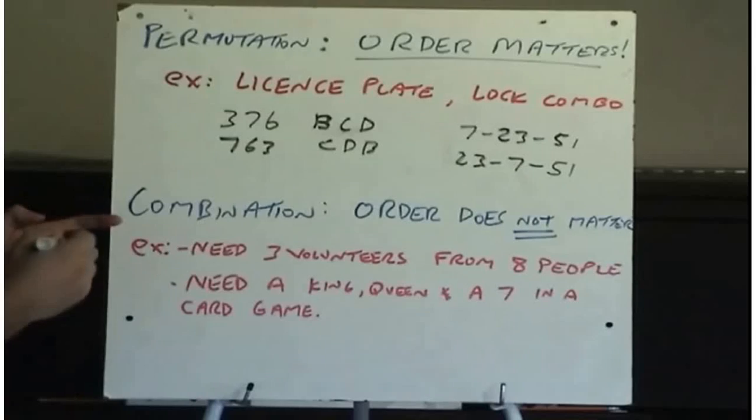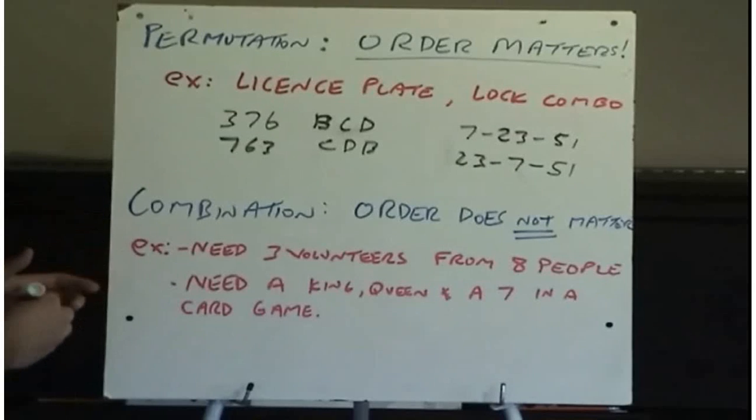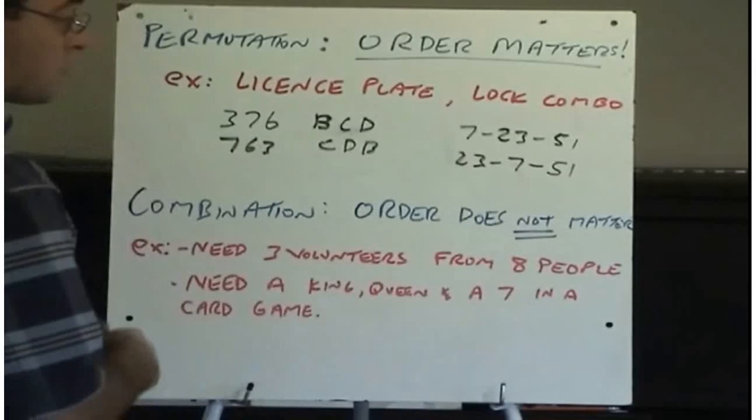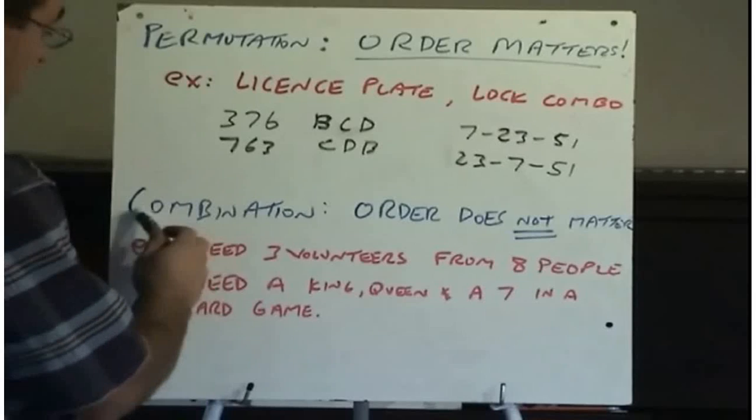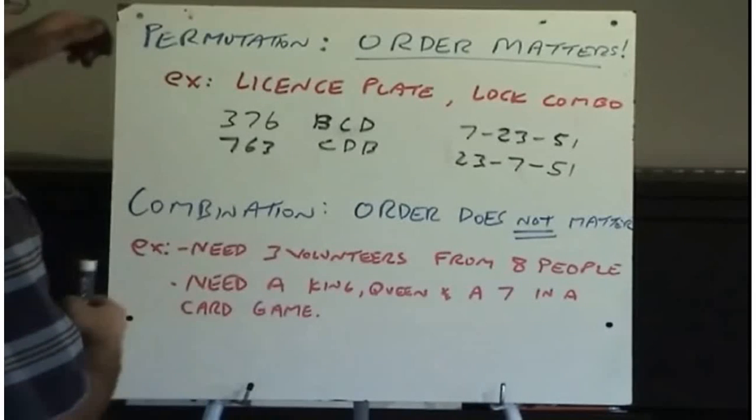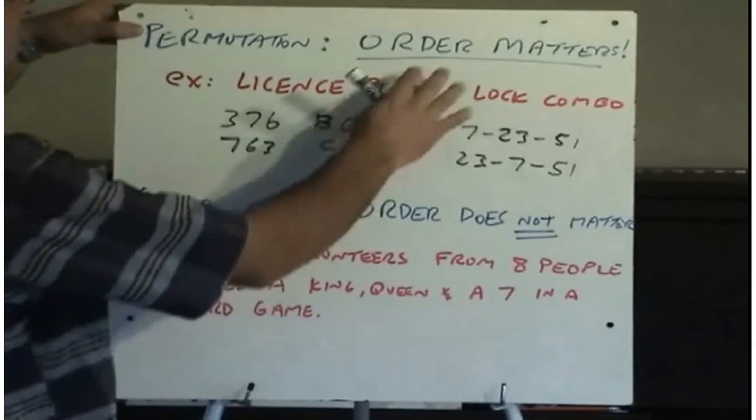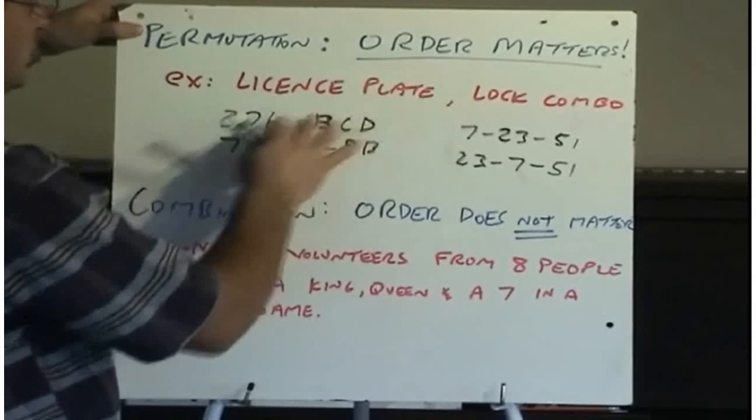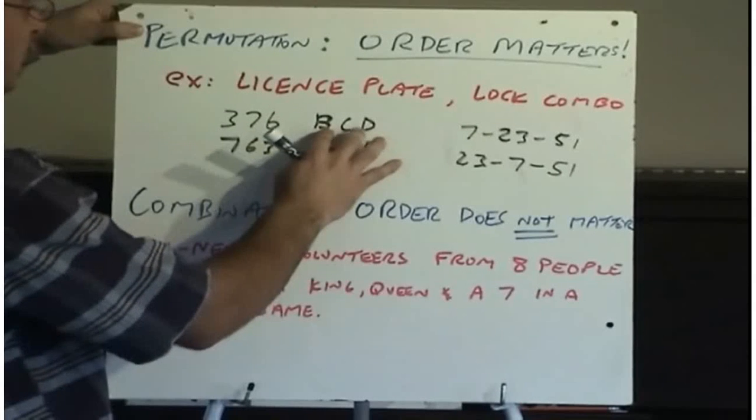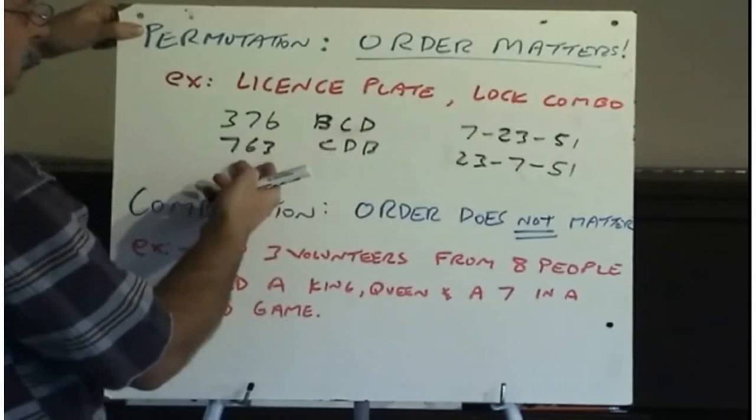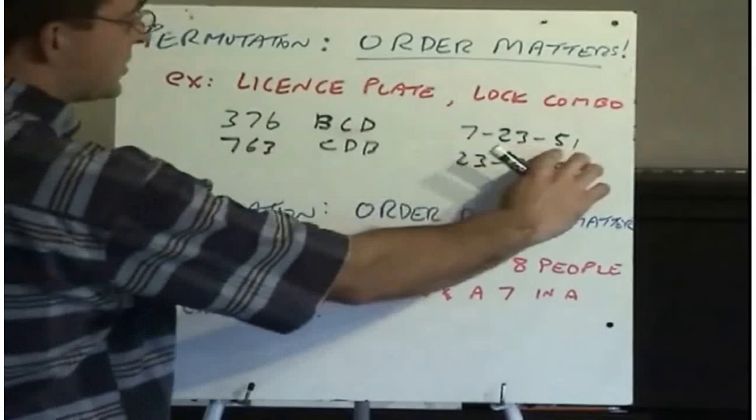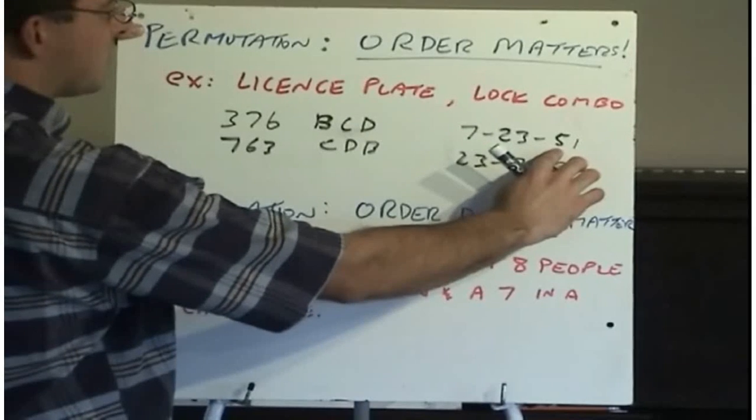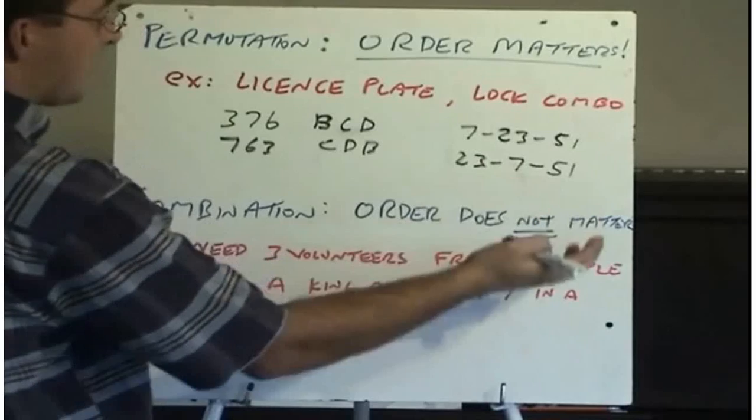Sometimes, when we're dealing with situations, the order does not make any difference, or it does not matter. These we call combinations. So it's very important that we know the difference between a permutation, where order matters. Once we've selected our letters and numbers, if we mix them up, we have something totally different. Or here, once we've selected our three numbers for our locker combo, when we change them around, it's something totally different.